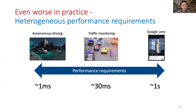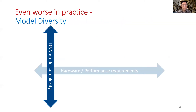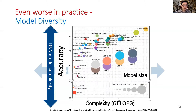Further, on different devices with different application scenarios, the performance requirements such as latency can vary from around milliseconds to a few seconds. Meanwhile, the number of different deep learning models is dramatically increasing. Here is a figure from a benchmark paper. Each circle represents a model achieving significantly different trade-offs between accuracy, model complexity, and size. And these are only a subset of models just for image recognition.